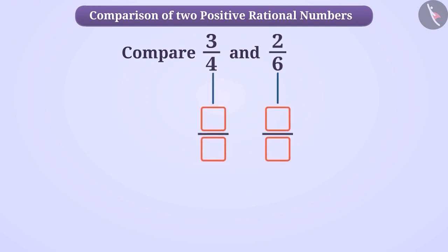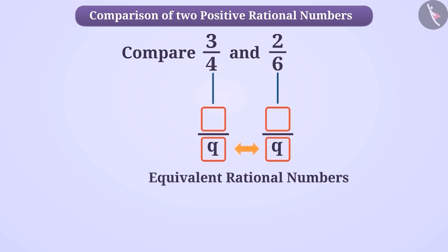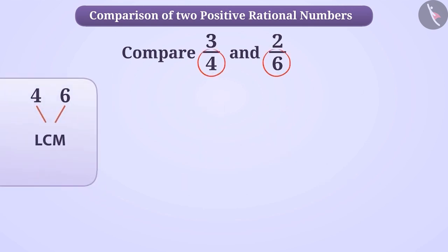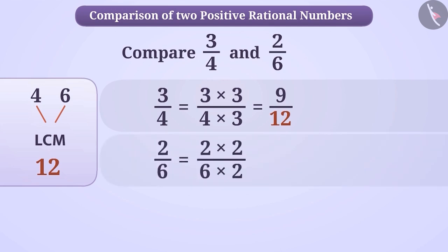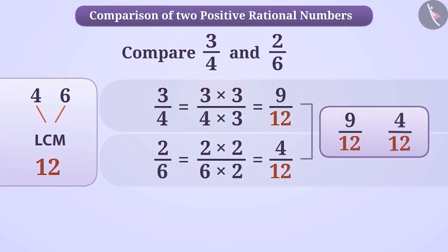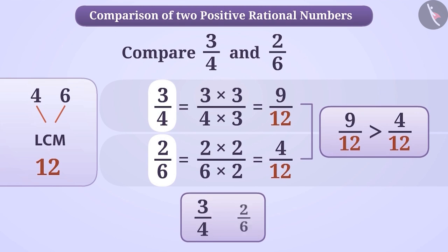If the denominator of rational numbers is not equal, then we find an equivalent rational number whose denominator is equal. For example, if we have to compare 3/4 and 2/6, then first we take the LCM of 4 and 6, which is 12. Then, we multiply the numerator and the denominator of 3/4 by 3 and obtain its equivalent rational number 9/12. In the same way, we multiply the numerator and the denominator of 2/6 by 2 and obtain its equivalent rational number 4/12. Since the denominators are equal and numerator 9 is greater than 4, we can say that 9/12 is greater than 4/12, or 3/4 is greater than 2/6.